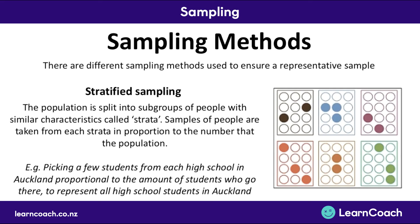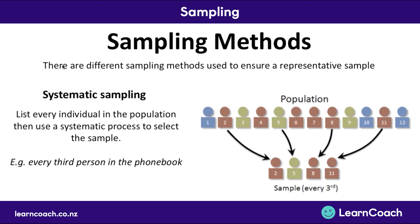With the street example, stratified sampling would mean picking some people from every street in a town, with longer streets having more people represented. It could also be split into ethnicities — the number of people chosen would be proportional to how much of the population that ethnicity makes up — or even split into genders. That's stratified sampling.